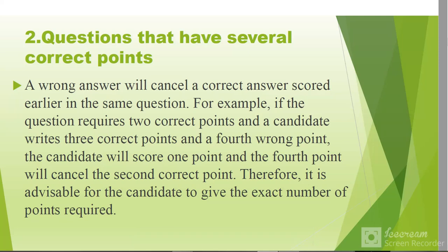Questions that have several correct points: a wrong answer will cancel a correct answer scored earlier in the same question. For example, if a question requires two correct points and a candidate writes three correct points and a fourth wrong point, the candidate will score one point, and the fourth point will cancel the second correct point. Therefore, it is advisable for the candidate to write the exact number of points required. Don't write more than you are asked to write.